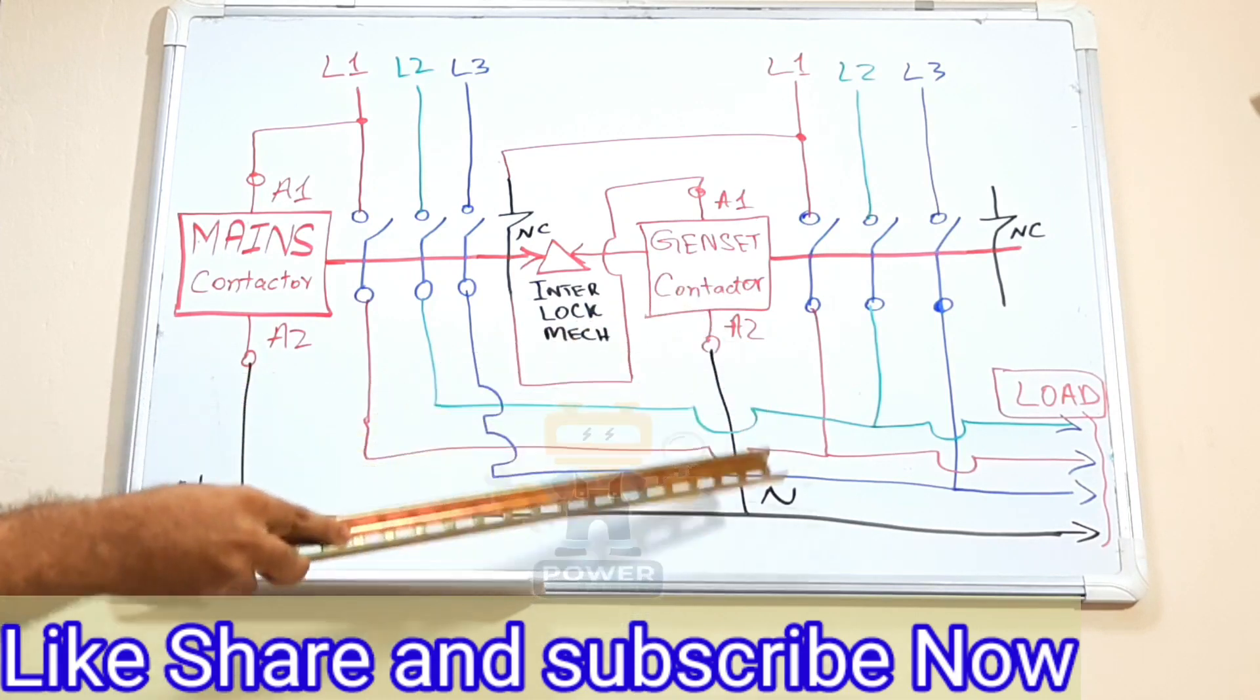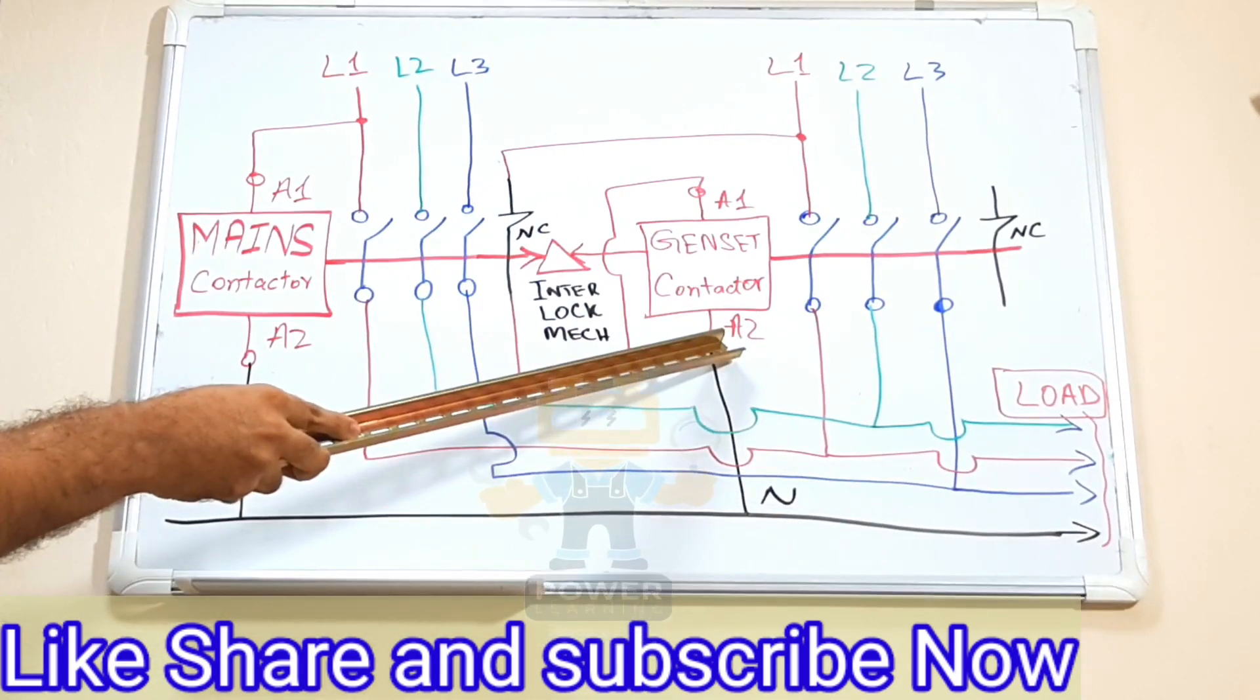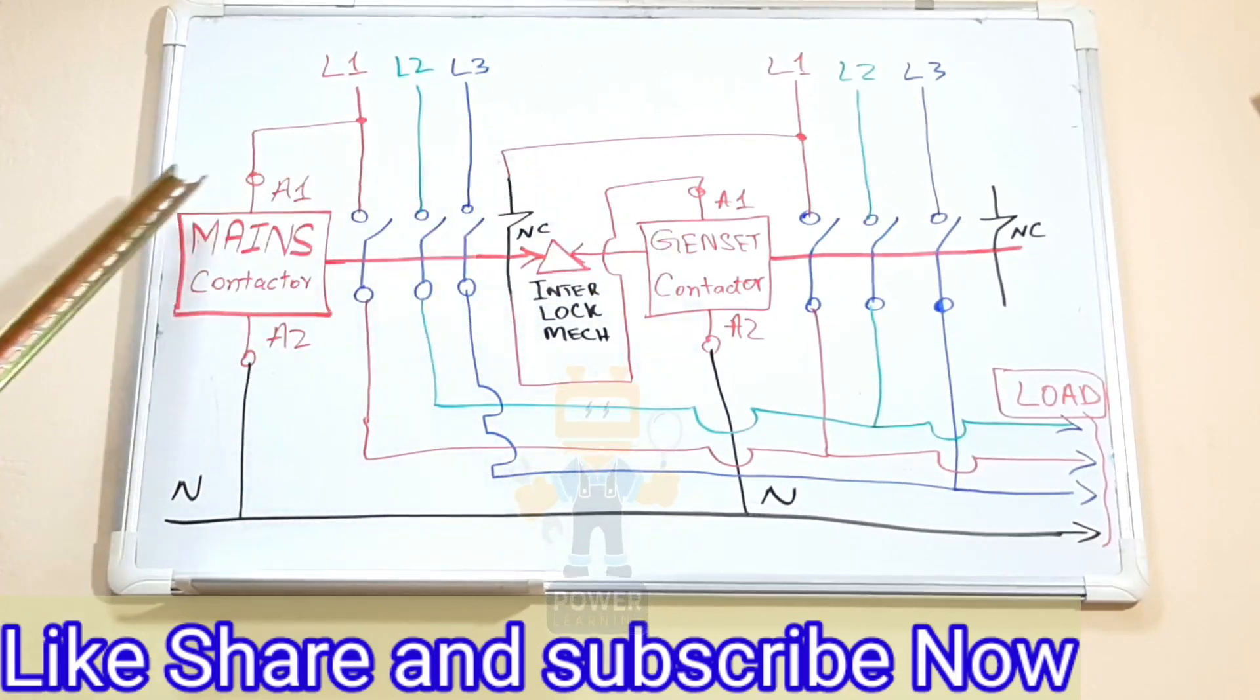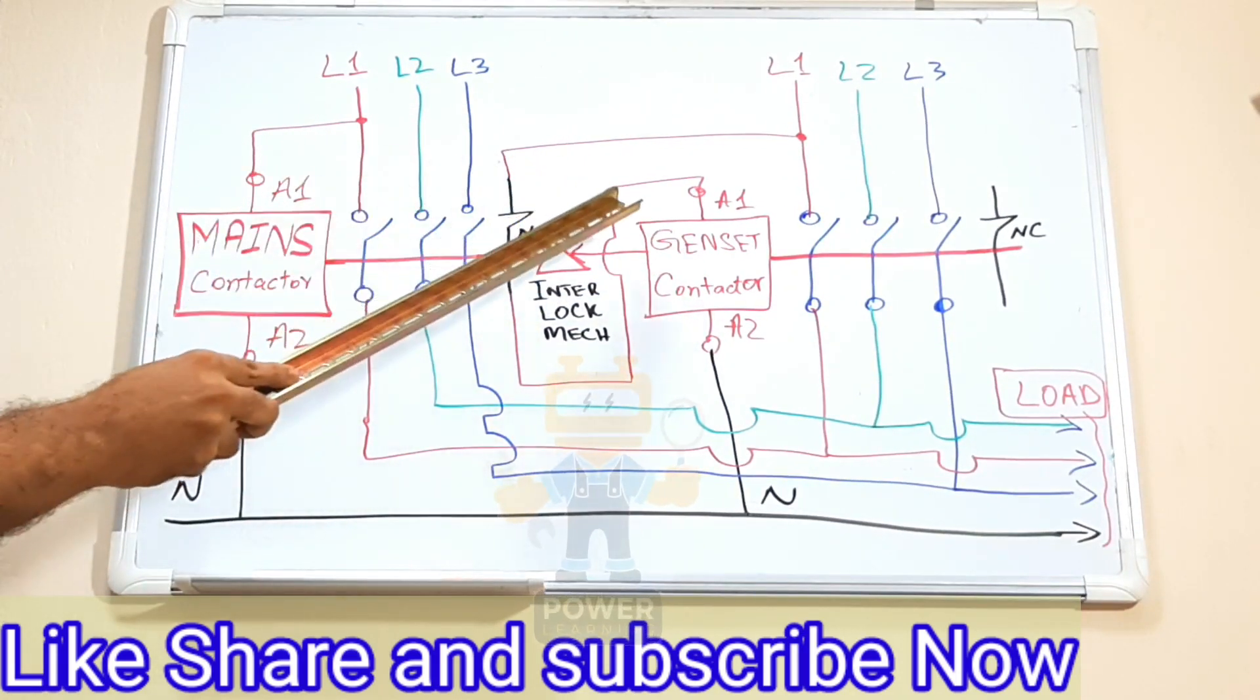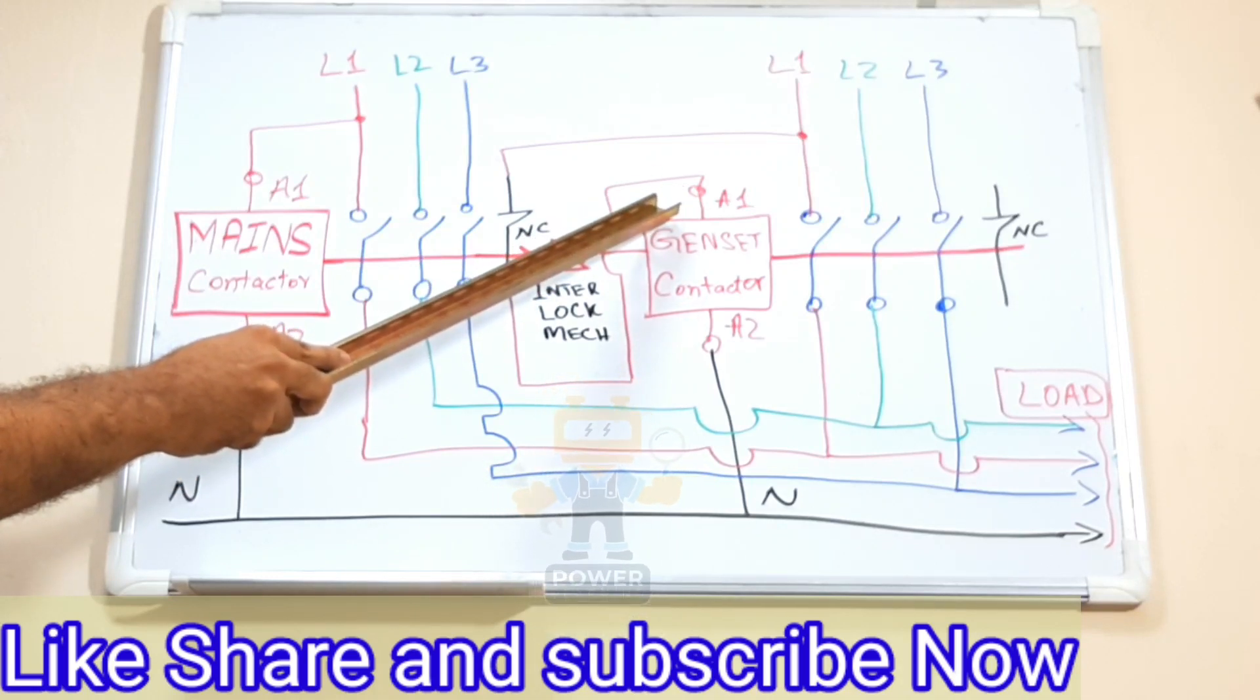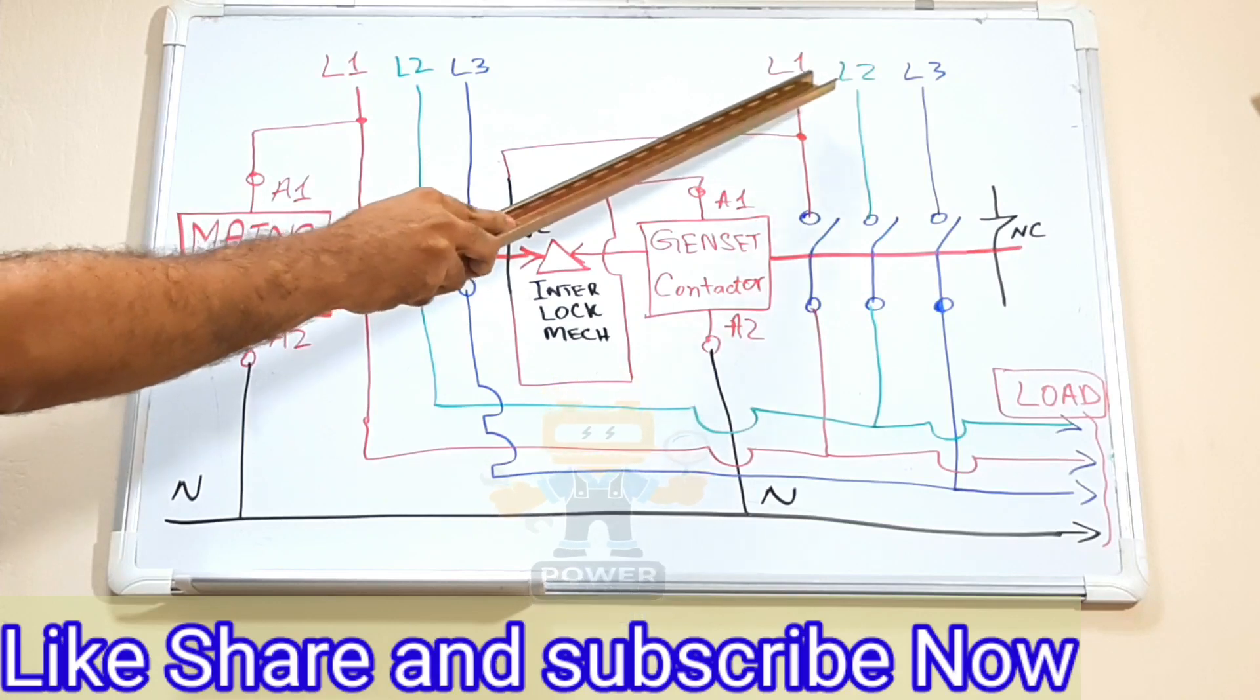Neutral directly to A2. So once this is on, this is off. When the power fails, this will become off immediately. Generator will start and this will turn on. Here we have line one, line two, line three, and here is all the output.